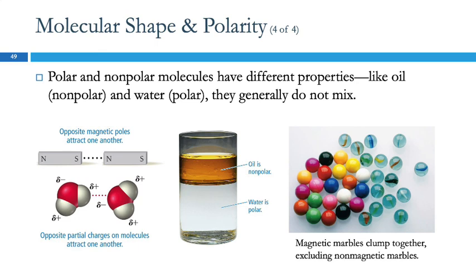Polarity of molecules matters a lot because it affects properties. Water molecules are polar — the hydrogen end is slightly positive, the oxygen end is slightly negative — so opposite ends attract like opposite poles of magnets. Oil is nonpolar, just carbon–hydrogen bonds with no positive or negative end, so oil molecules don't attract each other the same way. Water is polar, strongly attracted to other water molecules, and they squeeze the oil out. Less-dense oil floats; denser nonpolar substances would sink.